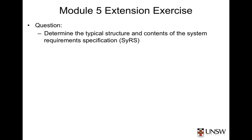Your task in this extension exercise is to do some research on systems engineering standards, texts and online sources to try to determine the typical structure and content requirements of the system requirements spec. Once you think you've found some reasonable information, you're required to develop a template for a system requirements specification for our house. This is to include section headings and explanations of the section content.